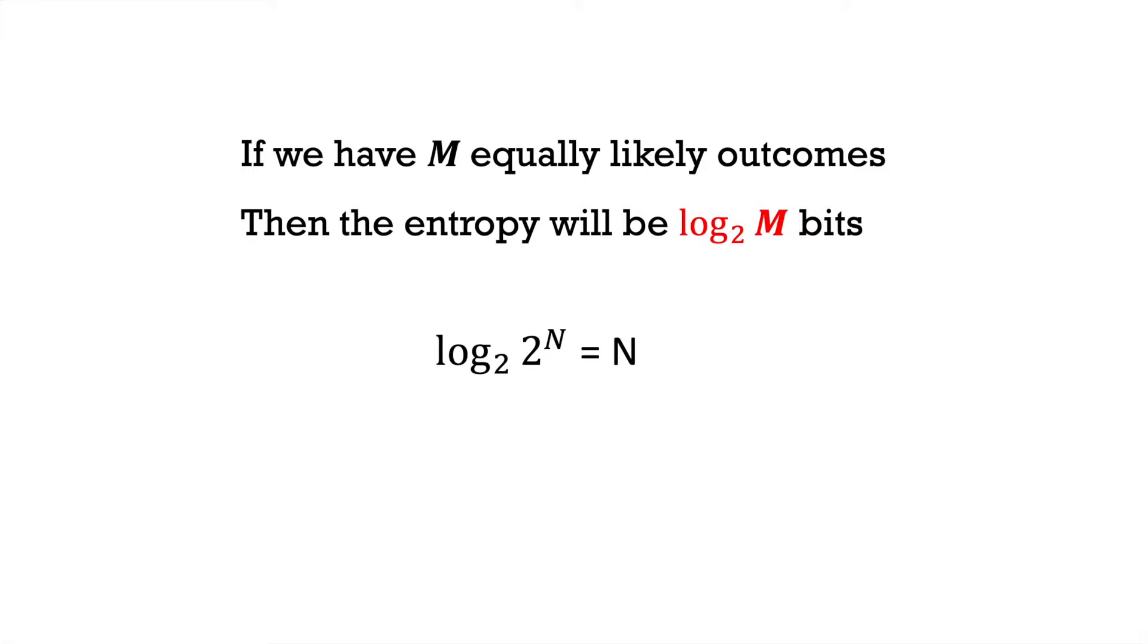However, we can also show that this formula even holds for uniform distributions where the number of outcomes is not a power of 2. Let's show this for the case where m equals 10.